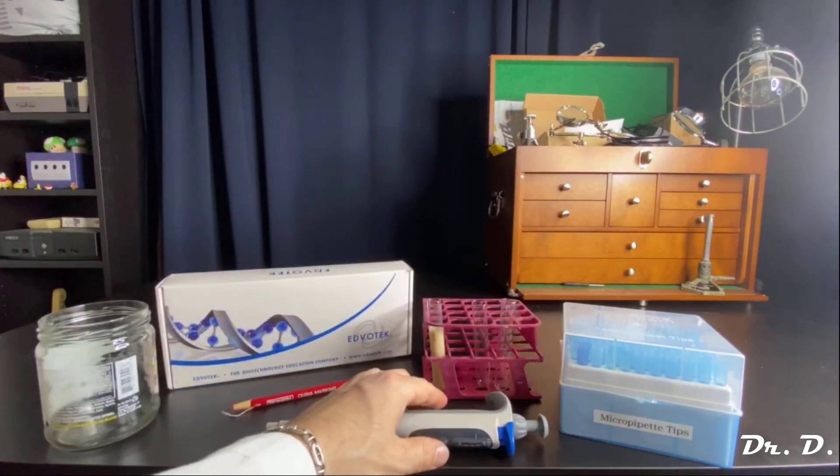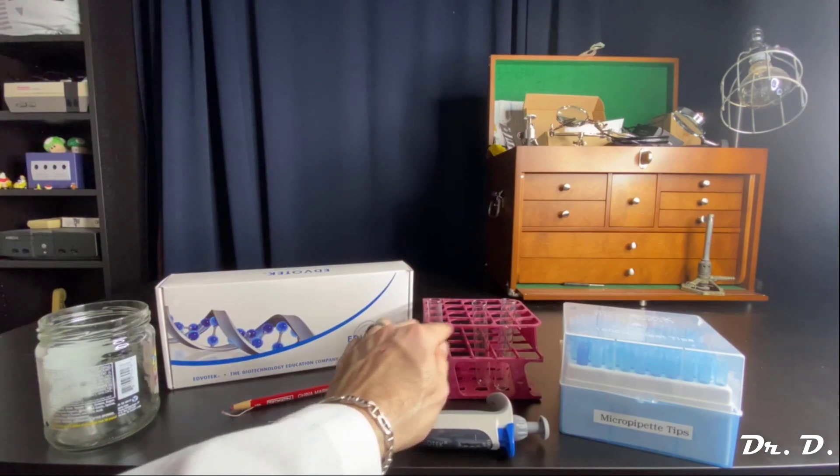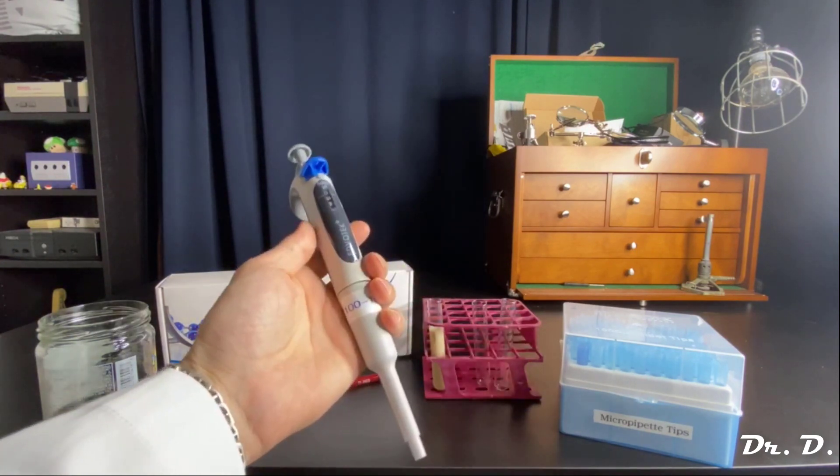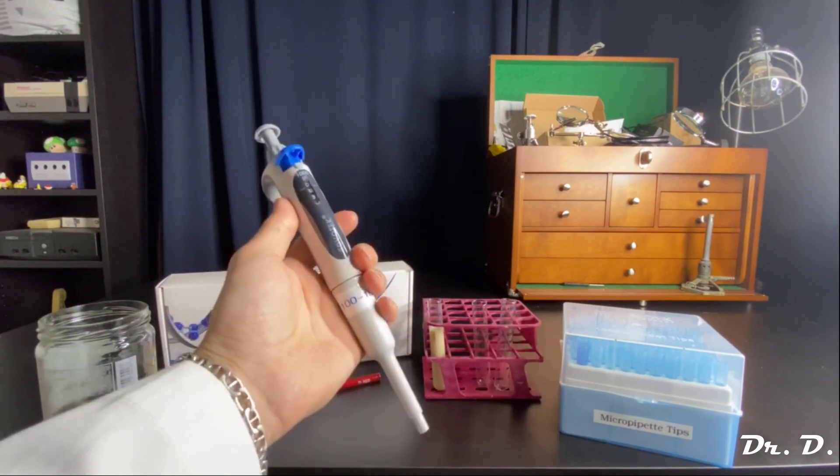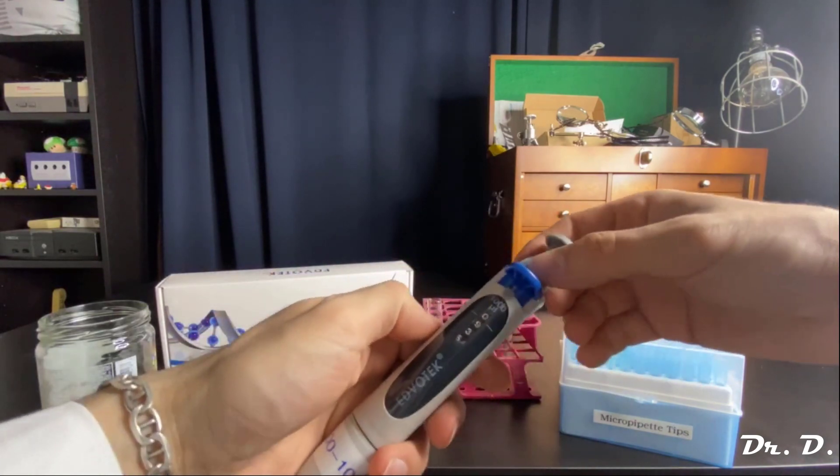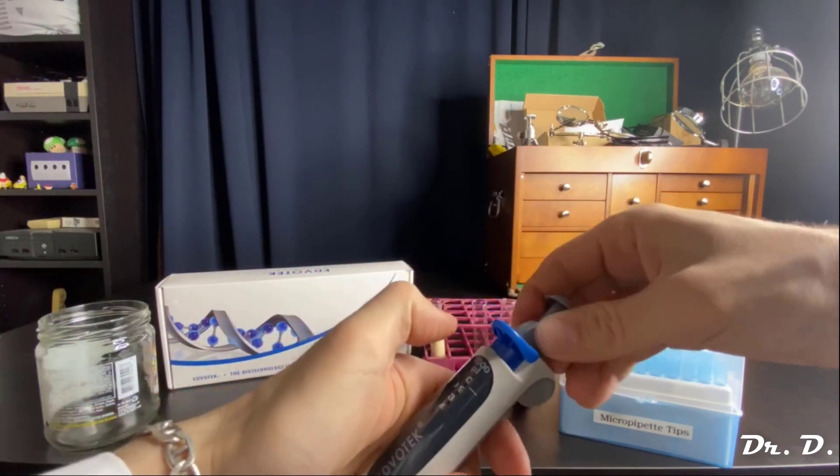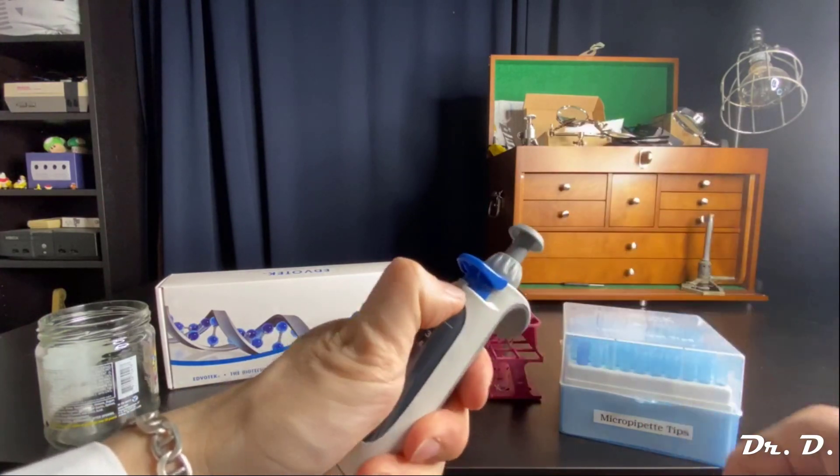I want to put, let's say, 500 microliters from tube one into tube two. How do I do that? First of all, I take my micropipettor and remember it might be locked. Right now it's not locked, but remember it might be locked. If it's locked, unlock it.